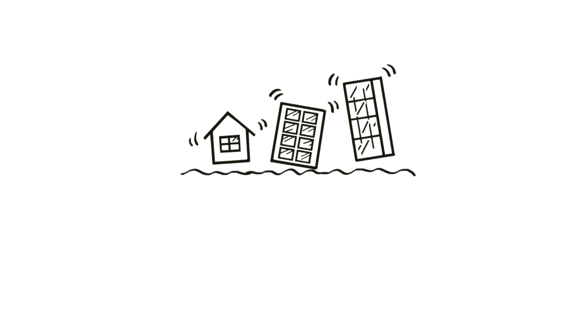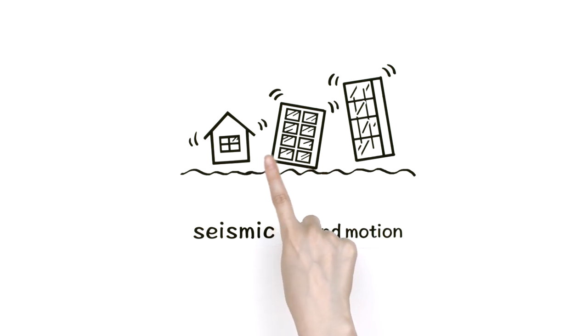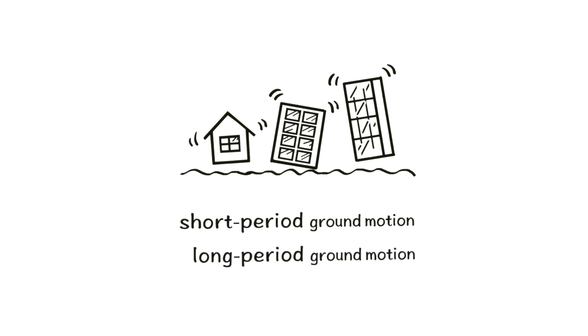The shaking movement due to an earthquake is called seismic ground motion. The number of seconds for each back-and-forth movement is its period. Depending on the length of the period, the movement is either short or long period ground motion.